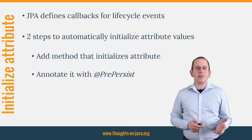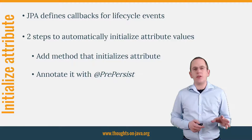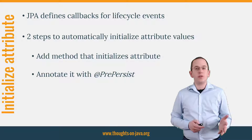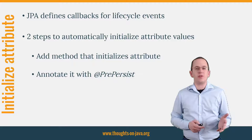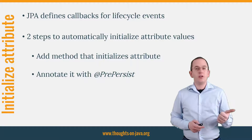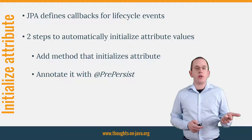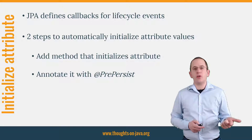The JPA specification defines a set of callback annotations to trigger method calls for certain lifecycle events. If you want to initialize an entity attribute before it gets persisted, you just have to do two things: add a method to the entity which initializes the attribute, and annotate this method with @PrePersist so that Hibernate calls it before it persists the entity.